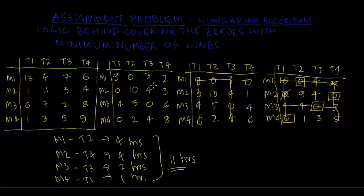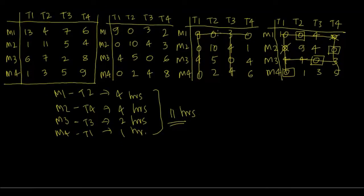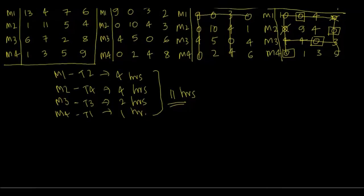Now I'll explain why we draw lines to cover the zeros with the minimum number of lines in order to move further. I'll pick the matrix obtained after deducting column-wise — specifically after deducting 2 from the fourth column — and use that as the starting point for the explanation.